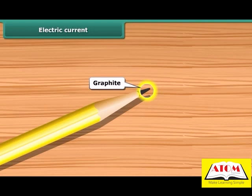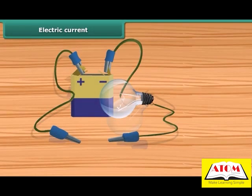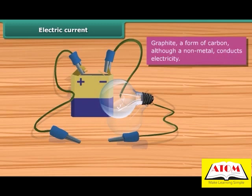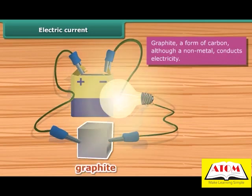It can be tested whether a given material is a conductor of electricity or not. Place the given material between the free ends of wires in an electric circuit. Bring the free ends of the two wires close. Now let them touch each other. If the bulb glows, the material is electrically conducting. Otherwise, it is an insulator.